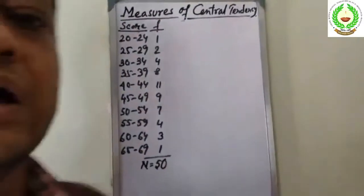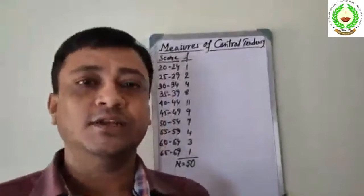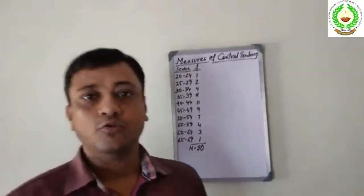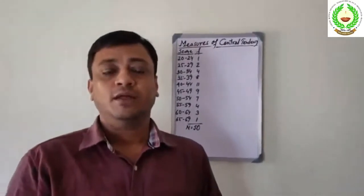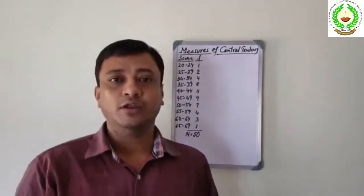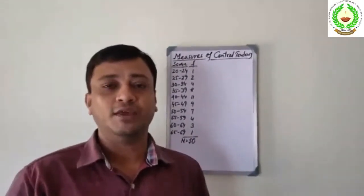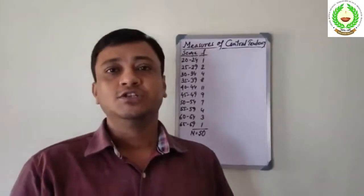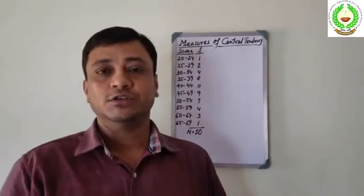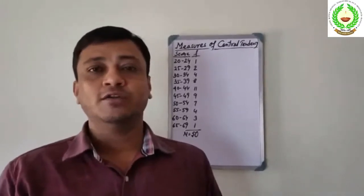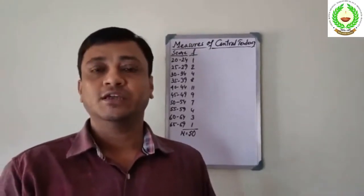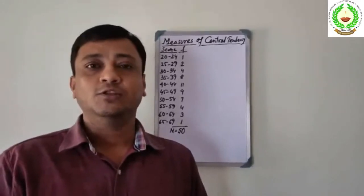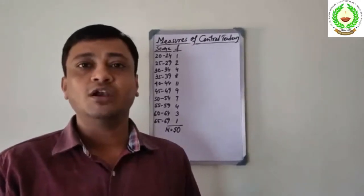Now, we have done the measures of central tendency and mean. We will now apply the same formula for the continuous distribution, using the exact lower limit in the median formula.